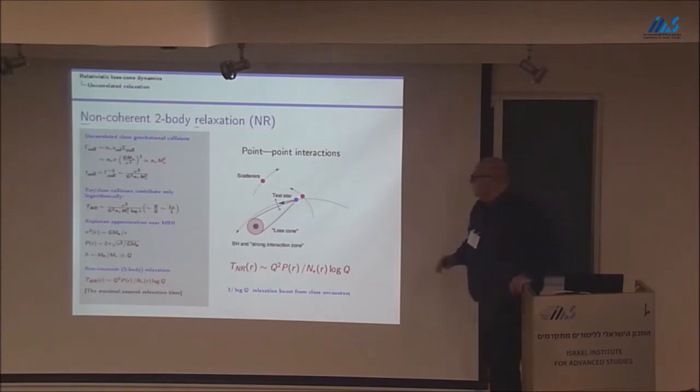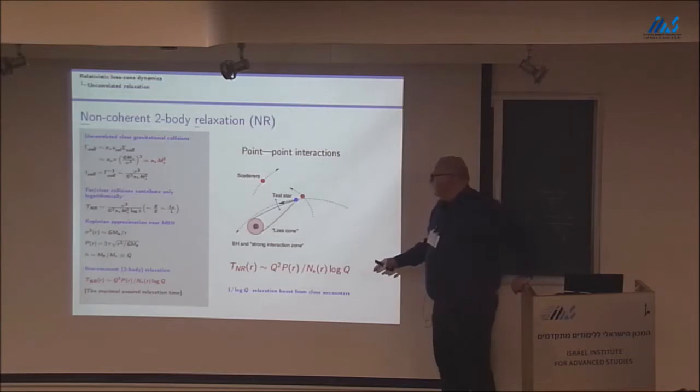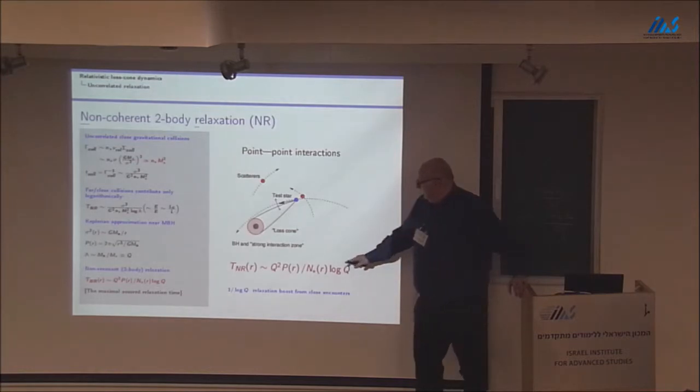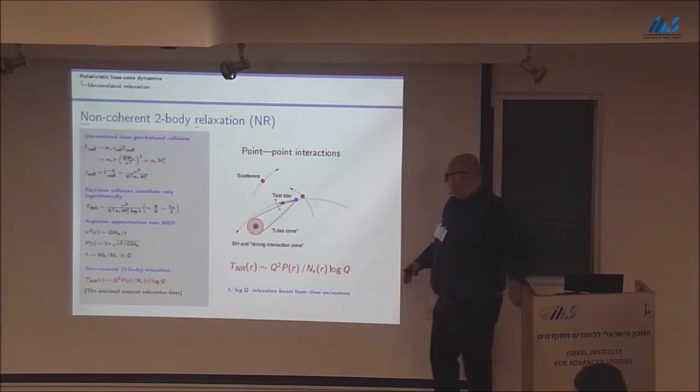I'll just mention very briefly the NR, just to establish the notation. If you were present here in the first day when I gave a short school talk, you already should know this formula. Two-body relaxation is unavoidable in any system composed of interacting particles. It's point-point interactions. Basically, the Q here, I'll use the notation that Q is the mass ratio between the black hole and a single star.